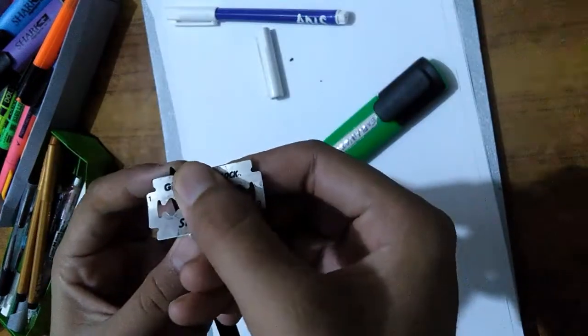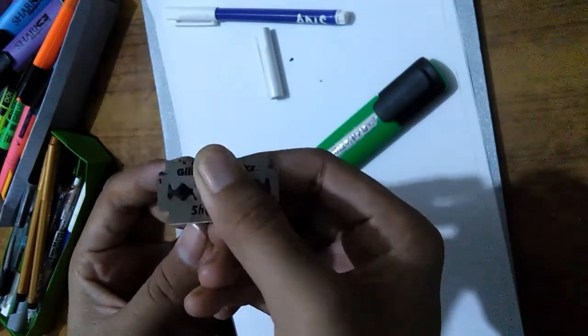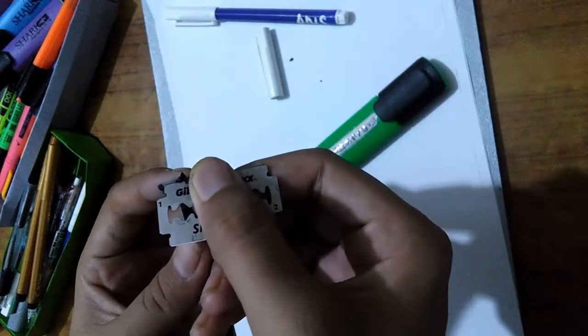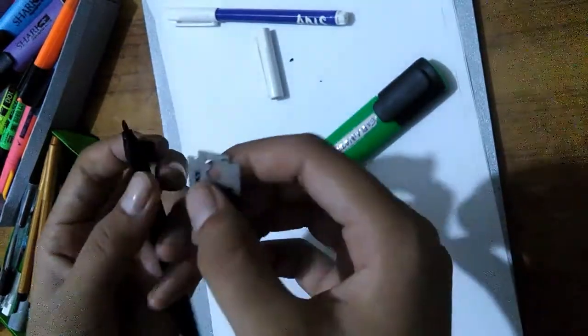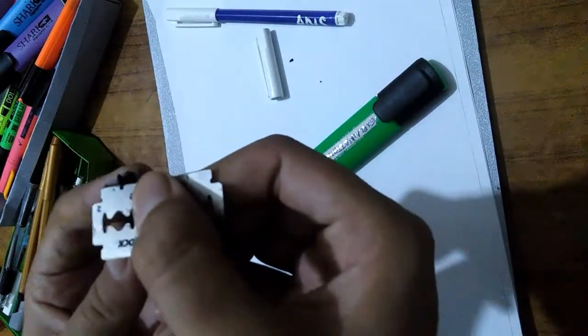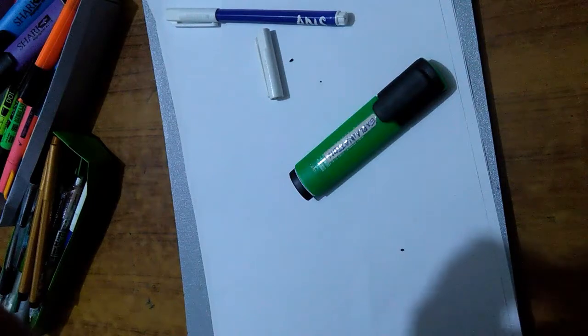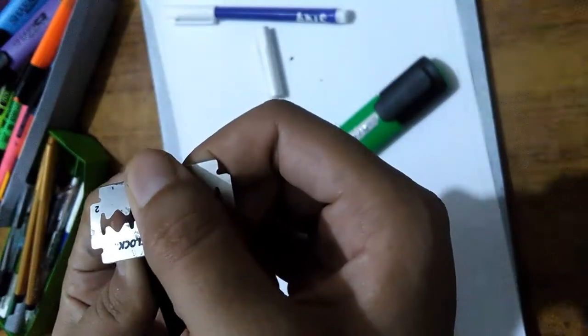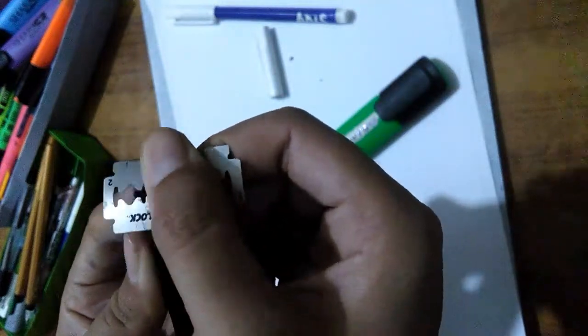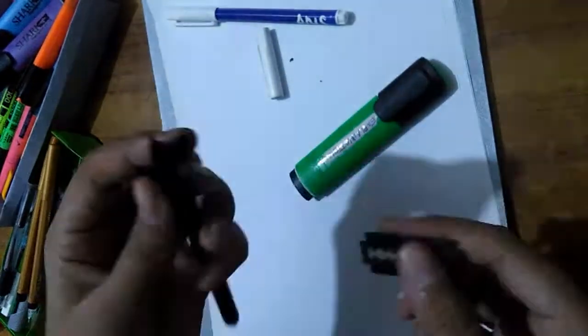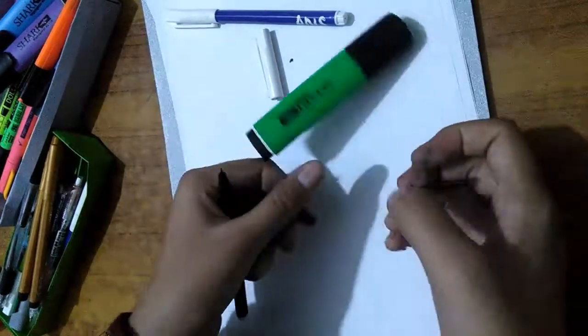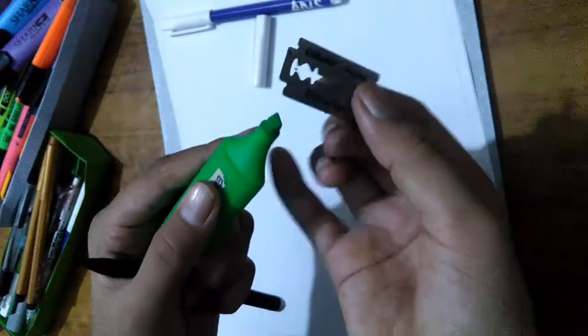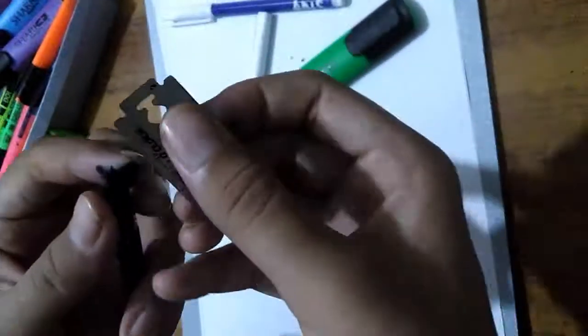Maybe you will not be able to make a perfect nib in your first go, so I will recommend you to try cutting the nib of some older markers and then cut the nibs of the new ones. When you have cut it from both sides, you will have to make a vertical cut.